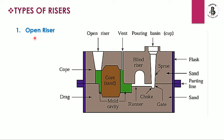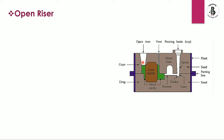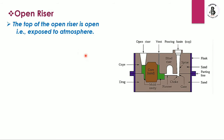Now there are two different types of risers — open risers and blind risers. Starting with the open riser: this is considered an open riser because it is open to the air. It is provided in the cope side. The top of the open riser is open, meaning it is exposed to the atmosphere. That is the location of an open riser.